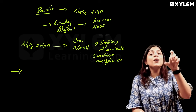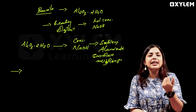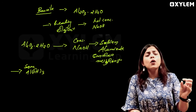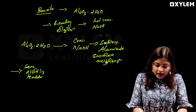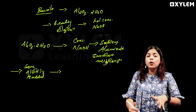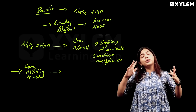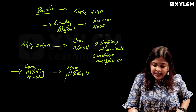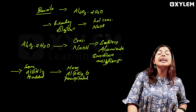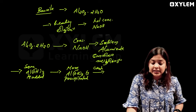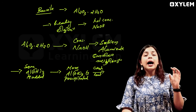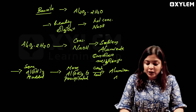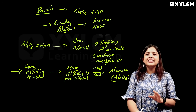We add sodium aluminate. Then we add freshly prepared aluminum hydroxide. Aluminum hydroxide is precipitated. We filter, wash, and then we call the product aluminum hydroxide precipitate. Then we heat it to get Al2O3. This is the reaction of the leaching method.